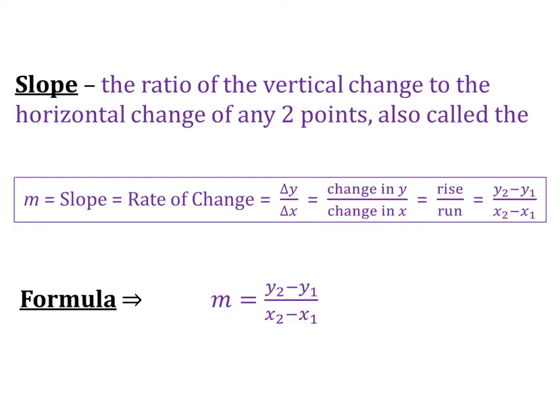The last one is the traditional slope formula. You'll see on your star chart M equals Y2 minus Y1 over X2 minus X1 is listed as your slope formula.